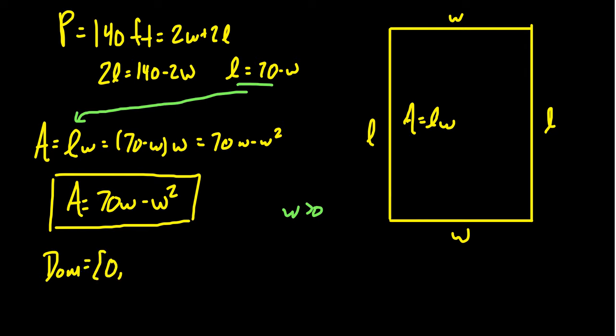What about upper bound? Well, it turns out that the upper bound is going to come from the other extreme, that the length should be greater than or equal to zero as well. What would the length being zero represent? If the length was zero, then we see that w would equal 70 when length is at zero. That's going to give us an upper bound that the width cannot be bigger than 70 because then that would require the length to be negative. So the domain is from 0 to 70.